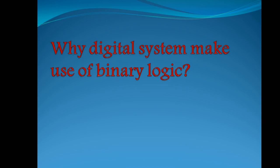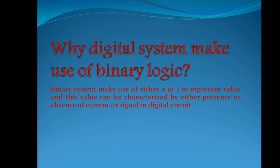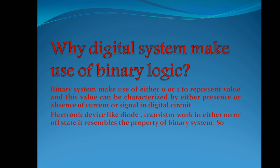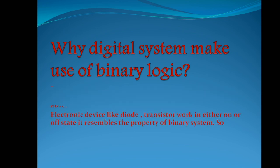Binary means two. The binary system uses two digits: zero and one. The components used in digital electronics — transistors, diodes, ICs — work in either an on-state or off-state, which corresponds to one or zero. That is why binary systems are used in digital electronics. A binary value is characterized by either the presence or absence of a signal in the digital circuit.